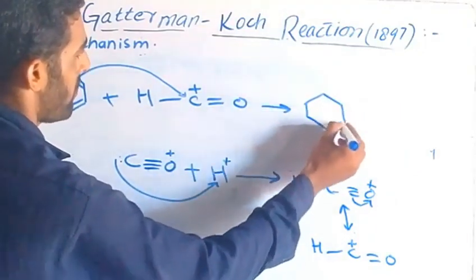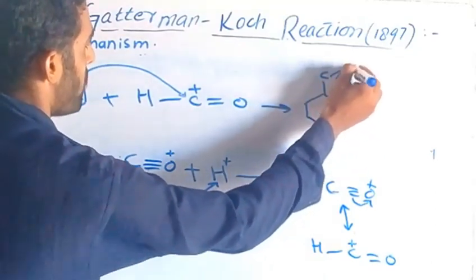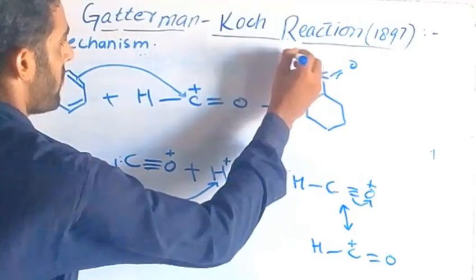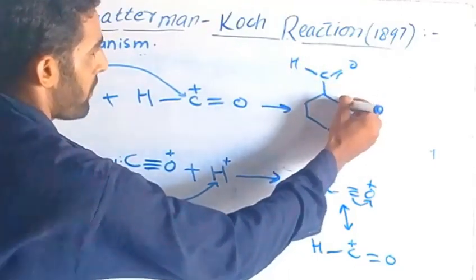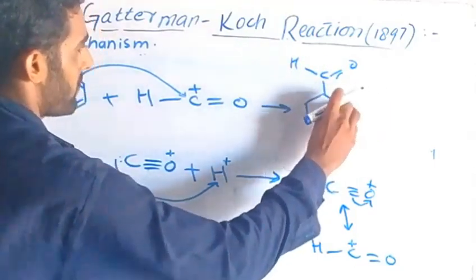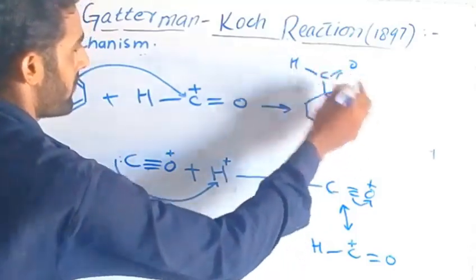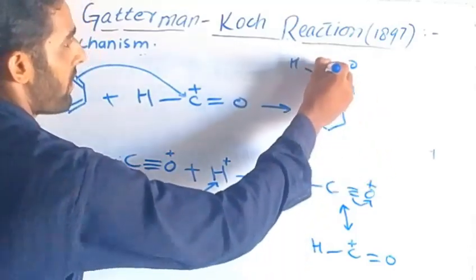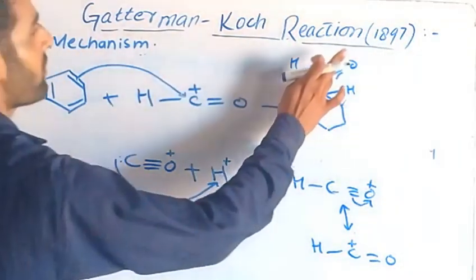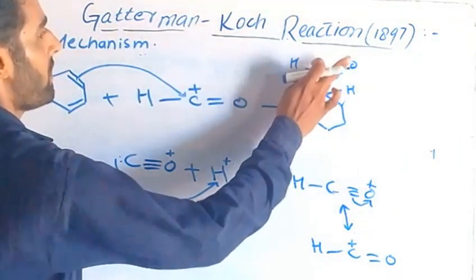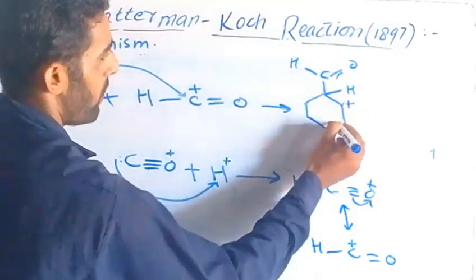Here the CHO group is introduced into the benzene ring. Here is the double bond to oxygen, here are the hydrogens, and here is the ring. There is a positive charge on the ring — the sigma complex or arenium ion is formed, with a positive charge.